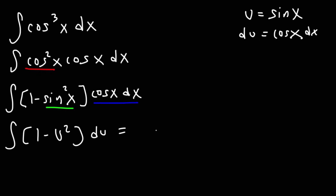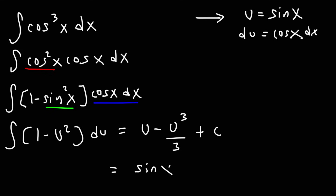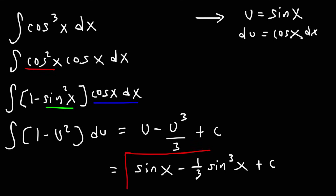The antiderivative of 1 is u. The antiderivative of u squared is u to the third over 3, and then plus c. Now our last step is to replace u with sine. So our final answer is sine x minus 1/3 sine to the third x plus c. That's the antiderivative of cosine cubed.